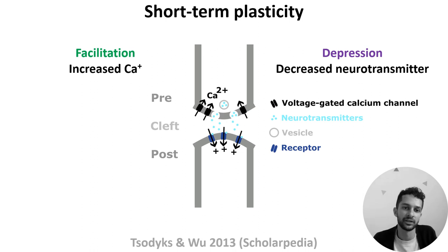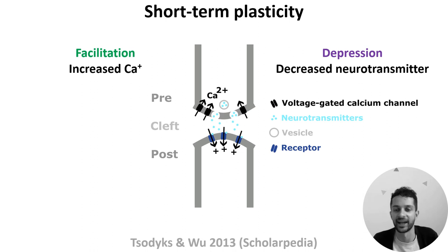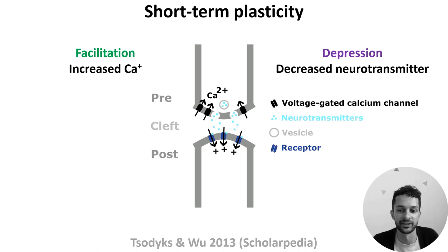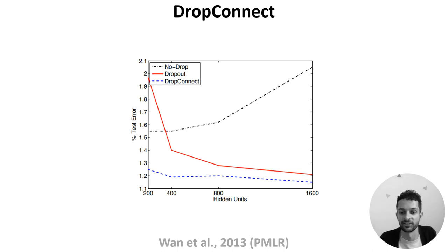So short-term plasticity reflects a neuron's recent activity, and the state of its synapses influences its weight dynamically. The fact that synapses can sometimes fail to send a signal may remind some of you of dropout in machine learning. Here it's individual connections which are failing, not entire units — and Jan LeCun and colleagues explored the difference between these two cases in a 2013 paper. With dropout, you randomly silence units during training, which reduces overfitting. With DropConnect, you randomly silence weights.